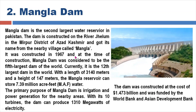Mangla Dam was constructed in 1967. At the time of construction it was considered the fifth largest dam in the world, but it is currently the 12th largest dam in the world. It has a length of 3,140 meters and a height of 147 meters.